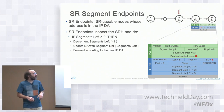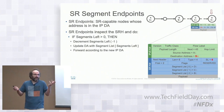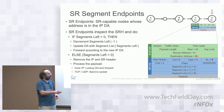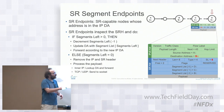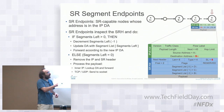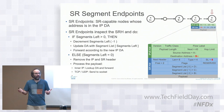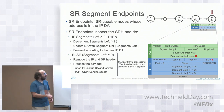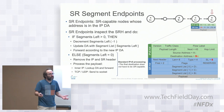Once the packet reaches router C, it does exactly the same thing: decrements segments left, D:: becomes the active segment, D:: is copied into the destination address, and the packet is sent accordingly to router D. That's the complete SRV6 forwarding process.